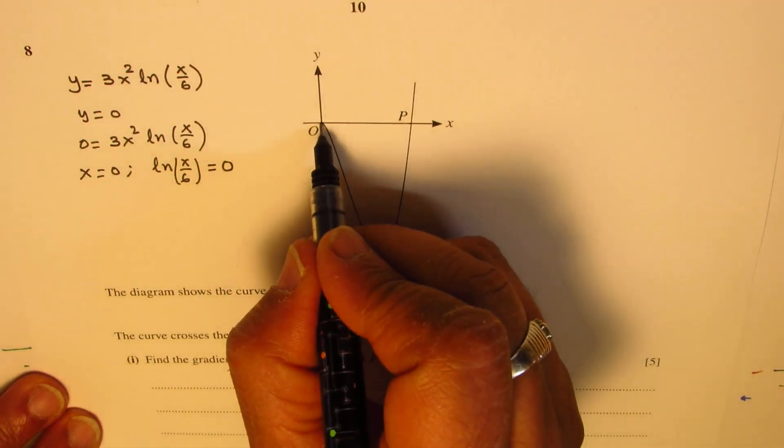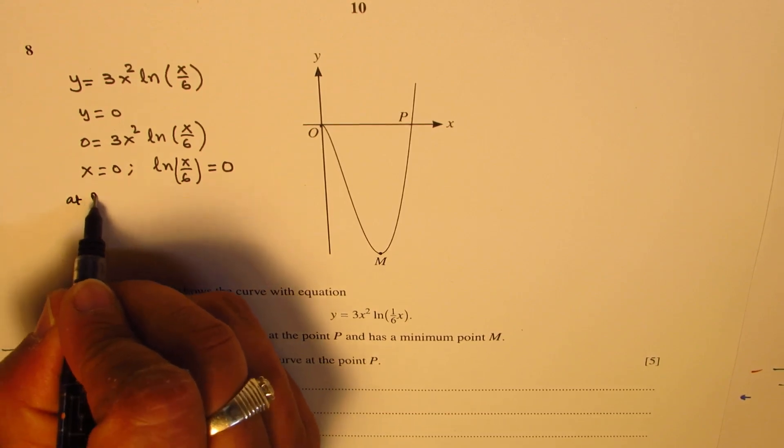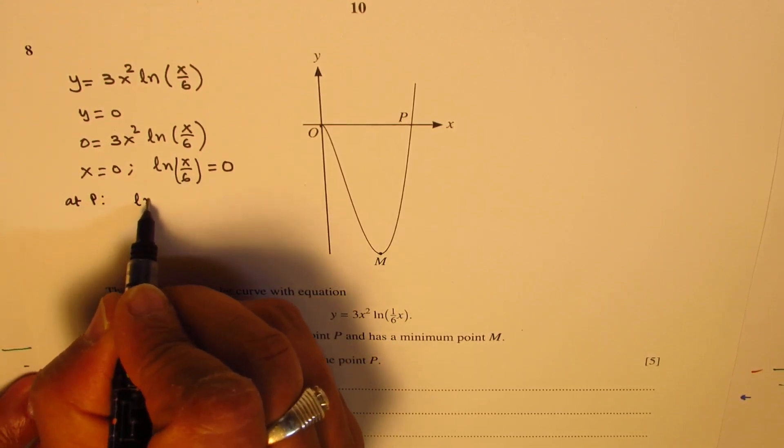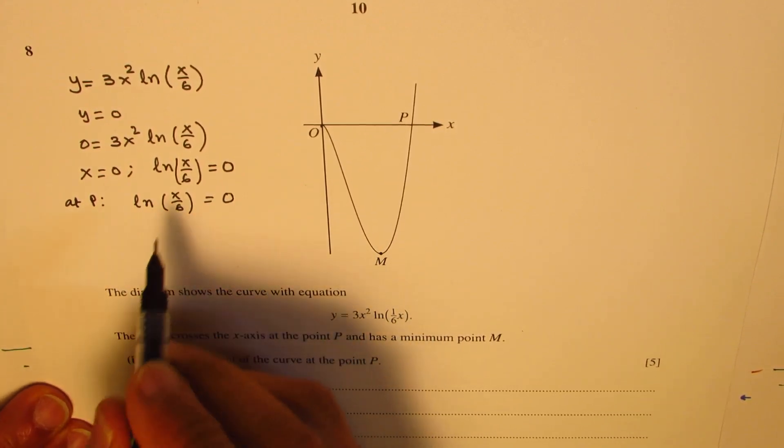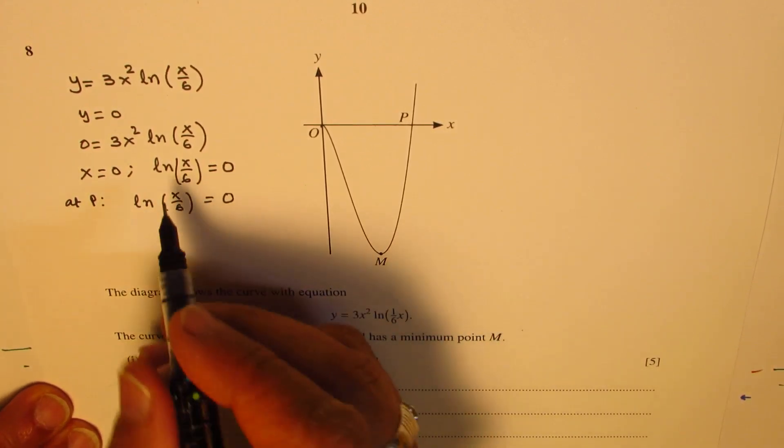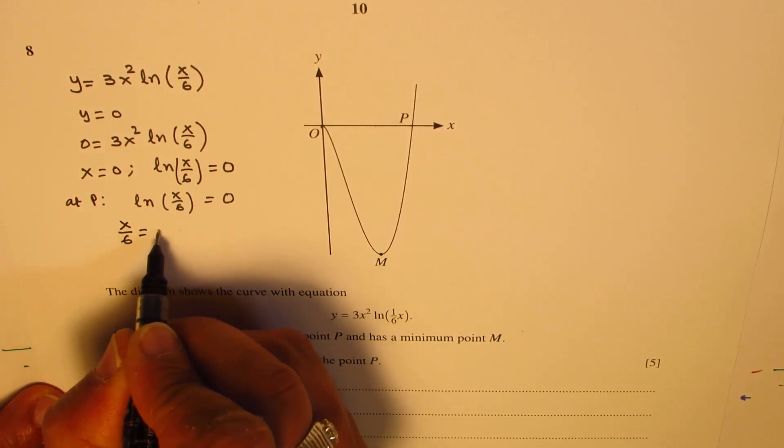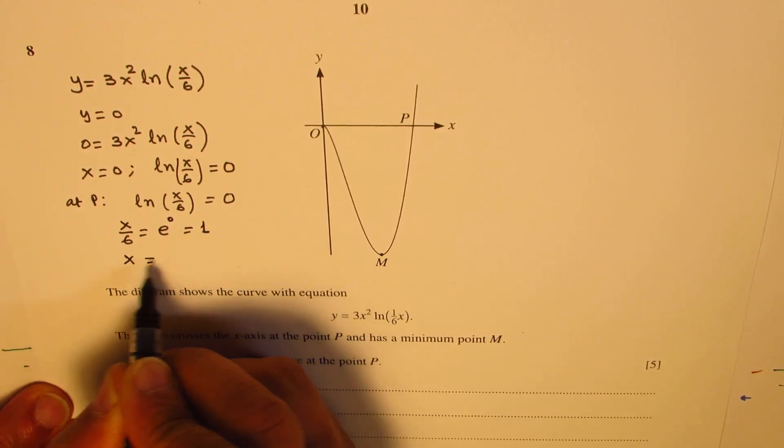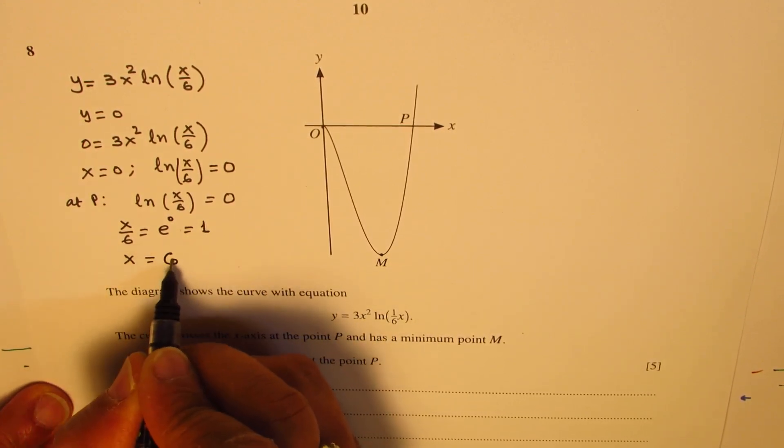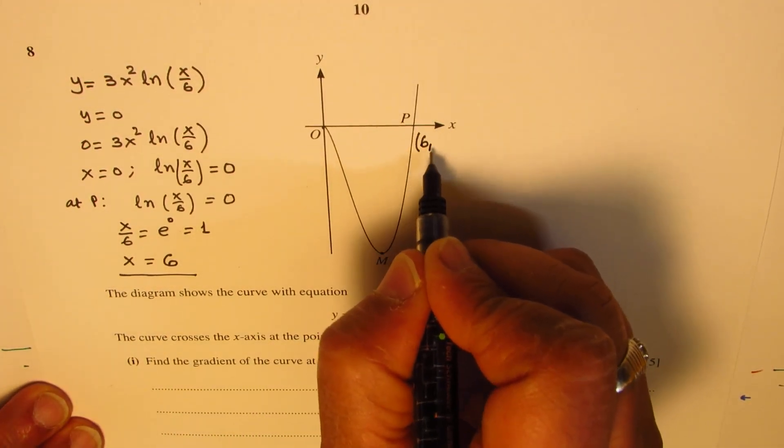Now, x equals 0 gives us the origin. We are looking at point P. So at P, we know it is ln(x/6), which is equal to 0. That means x/6 is 1. Some of you could also write that x/6 is basically e to the power of 0, or 1, and that gives you x as 1 times 6, which is 6. So we get the value of P as (6, 0).